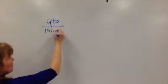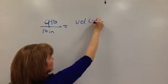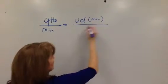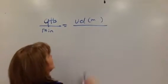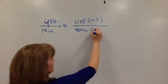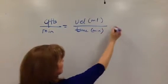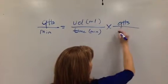Per minute is equal to volume in milliliters over time in minutes, multiplied by drops per ml. That's the equation I'd like you to use.